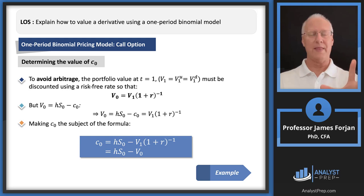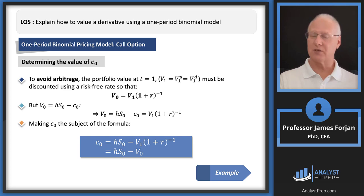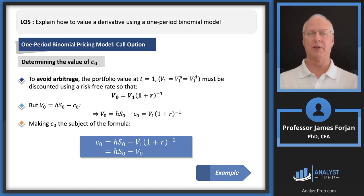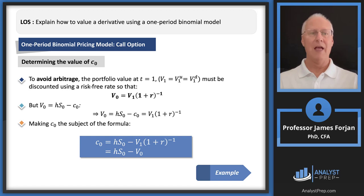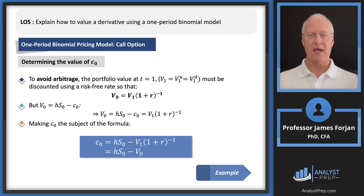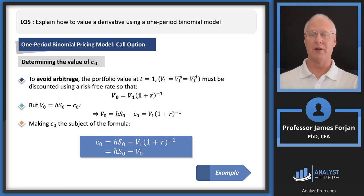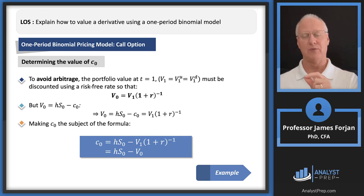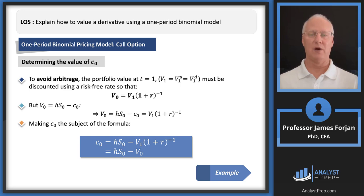We've done the replication part; now let's talk about the arbitrage condition. The value of this portfolio — writing the option and owning shares of stock — has to be equilibrated by the risk-free rate of interest. The value today has to equal the present value one period from today. Substituting the hedge ratio gives us the final equation: the value of the call option today equals the hedge ratio times the spot price today, minus the value of that hedged portfolio.